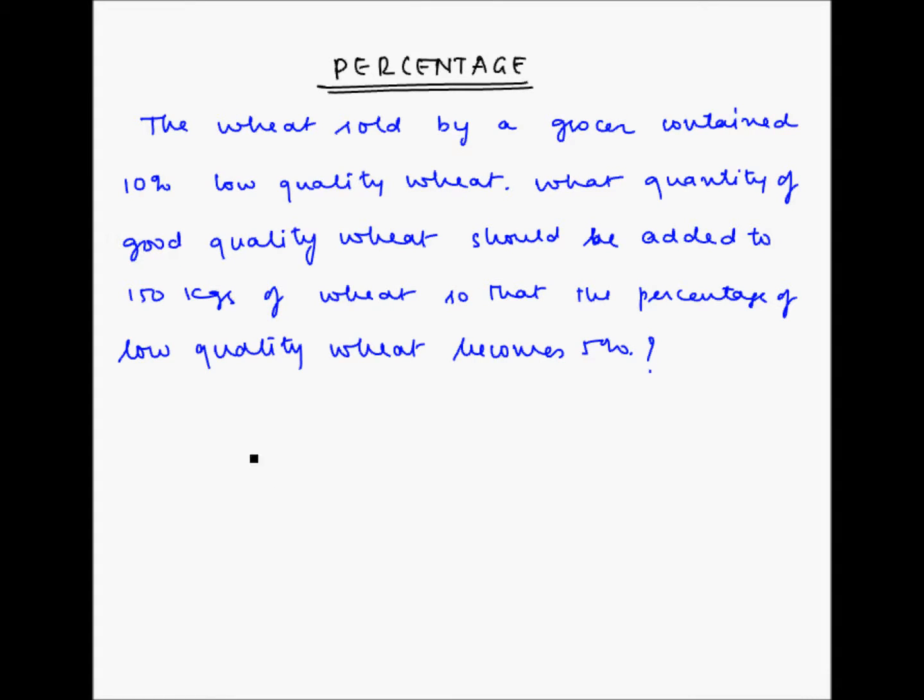Welcome to another example of percentages. The wheat sold by a grocer contained 10% low quality wheat. What quantity of good quality wheat should be added to 150 kgs of wheat so that the percentage of low quality wheat becomes 5%?